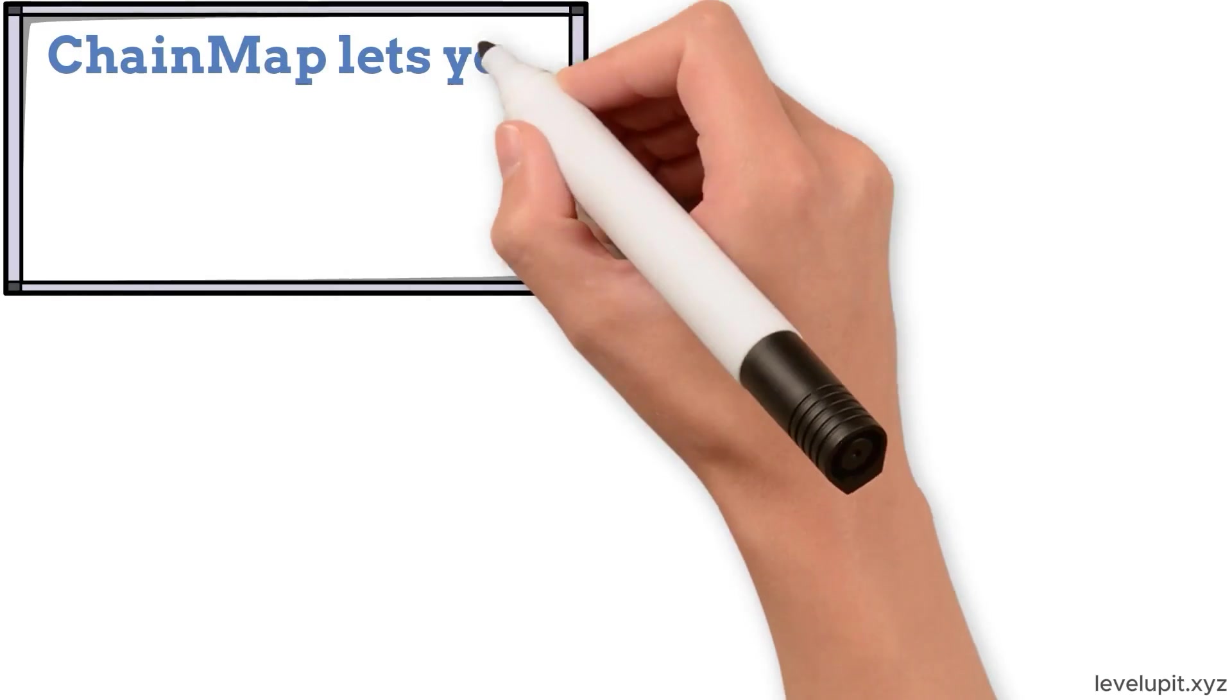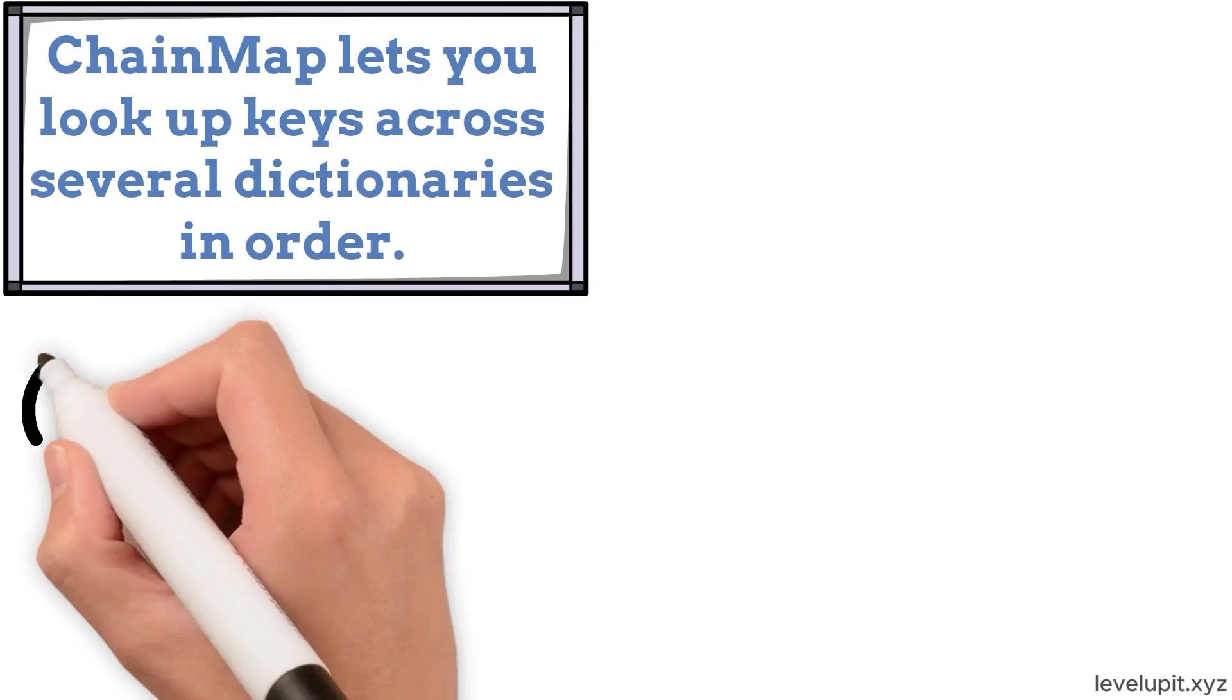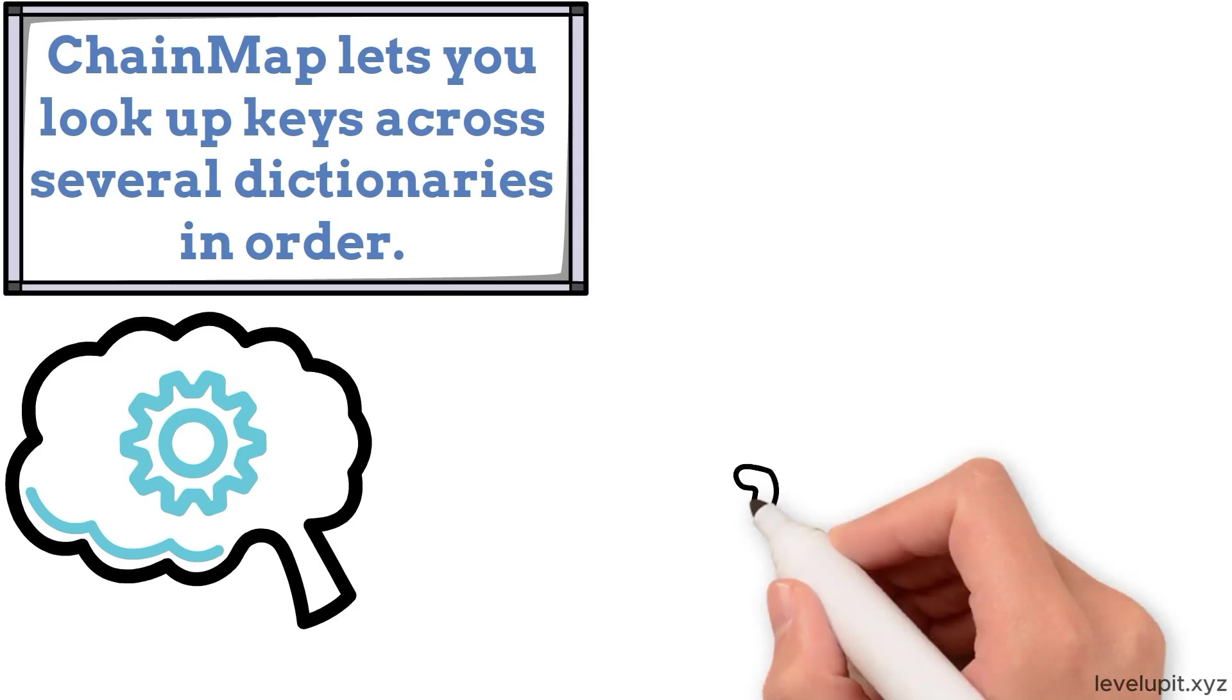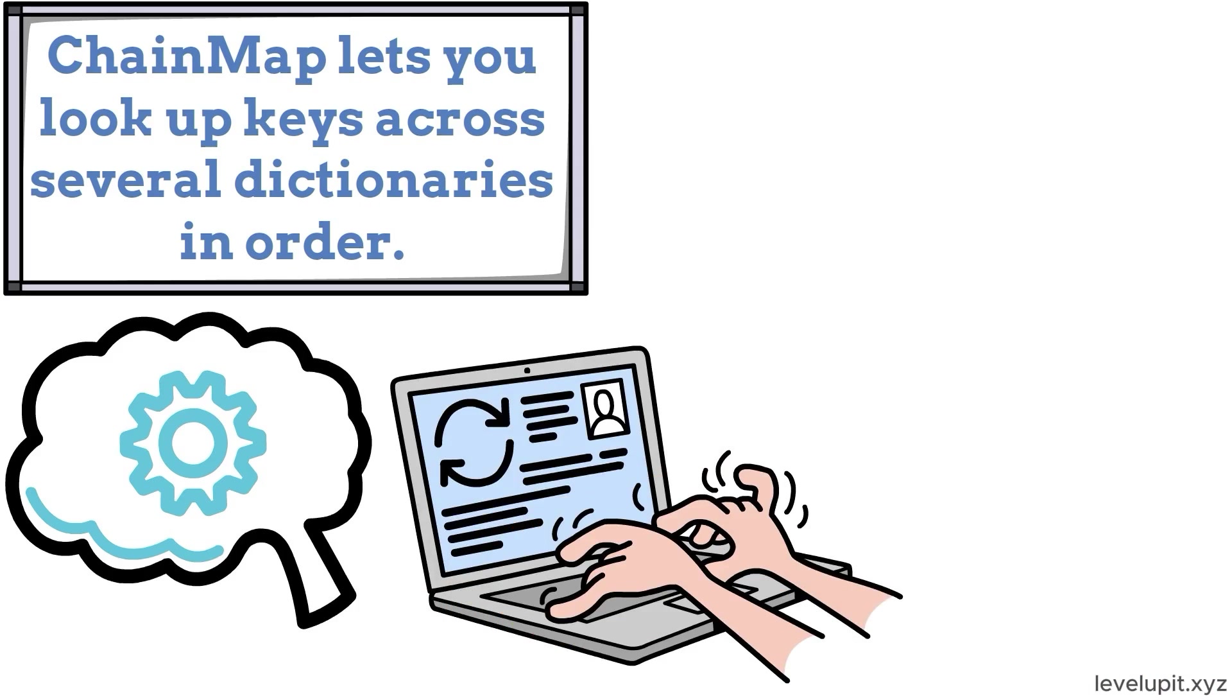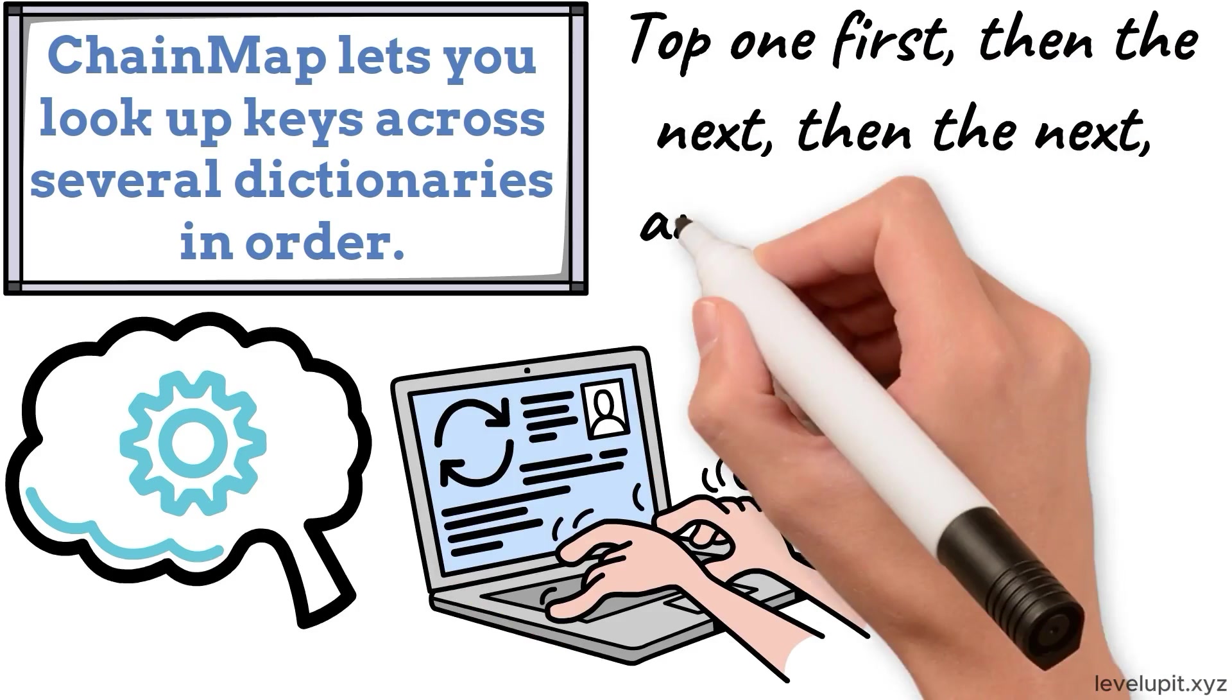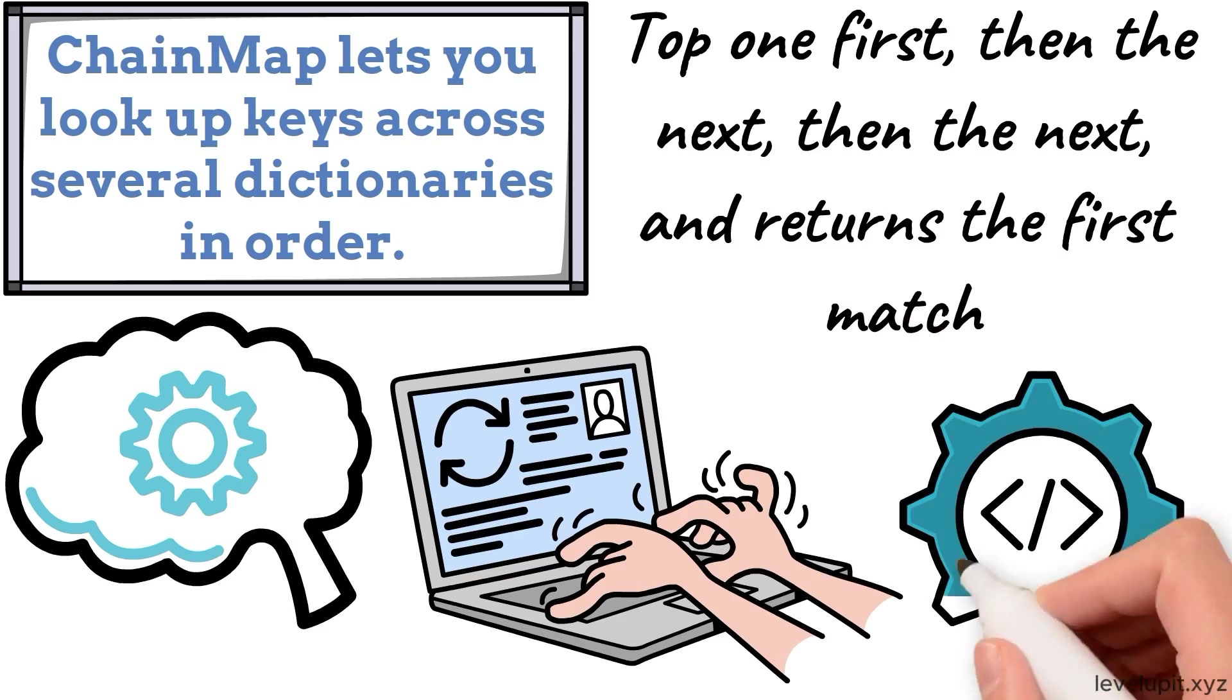ChainMap lets you look up keys across several dictionaries in order. Think of configuration: defaults live in one dictionary, environment settings in another, and user overrides in a third. A ChainMap searches the top one first, then the next, then the next, and returns the first match. It keeps code short and matches the way people think about layered settings.